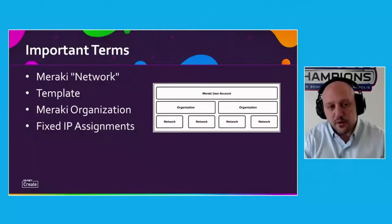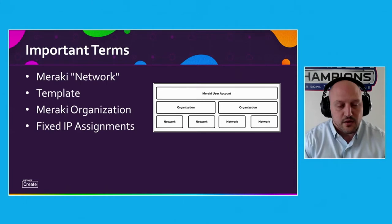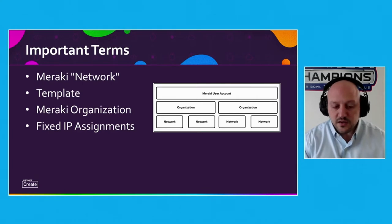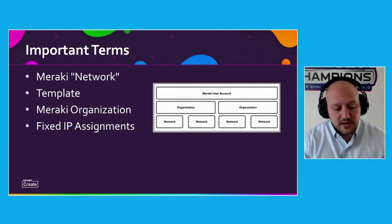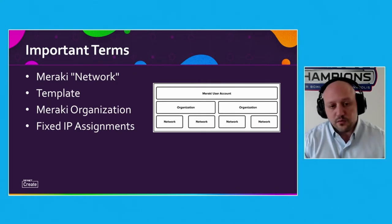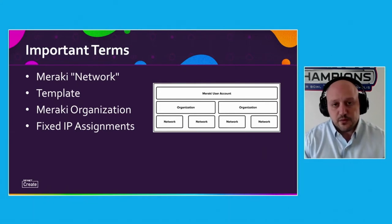A couple of important terms to understand as I start the session today: when you hear me say network within the Meraki context, a network can be thought of almost like a site. So it's not going to be a subnet or a VLAN — it's more of the actual location. This particular problem that we solved was for a retail customer, and so you can think of each site or each network as an individual store. A Meraki template is kind of a configuration shell that allows you to apply VLANs, firewall rules, IP address information, port assignments — things like that at a template level. And then you apply that template to sites or networks to share those settings.